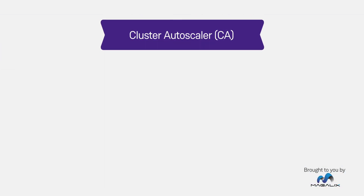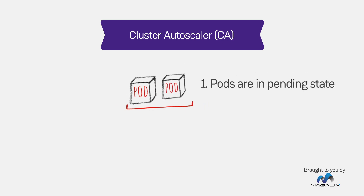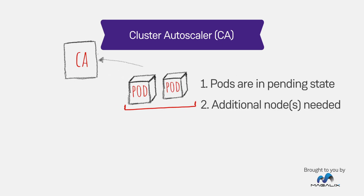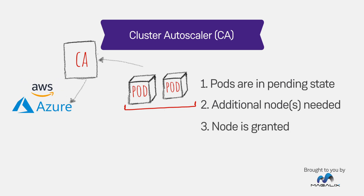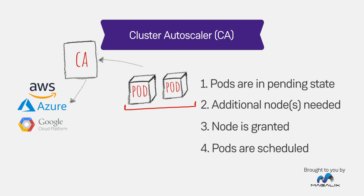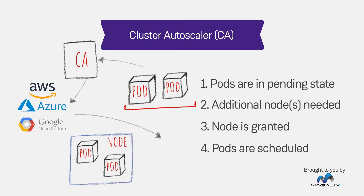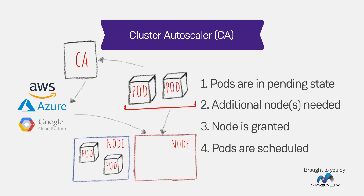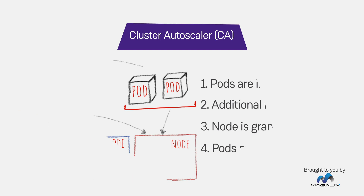And the Cluster Autoscaler, or CA, scales your cluster nodes based on additional capacity needs. When some pods go into the pending state due to resource starvation, the CA interfaces with the cloud provider to request additional nodes. Pods are then scheduled to the new nodes and turn into running state.